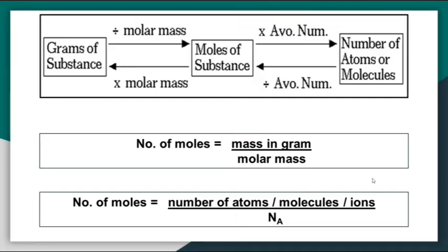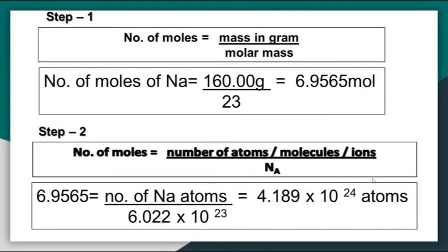We use the formula: Number of moles = mass in grams ÷ molar mass. Then, number of moles will be multiplied by Avogadro's constant. Step 1: Number of moles = 160 g (mass of sodium) ÷ 23 (molar mass of sodium). We obtain 6.9565 moles of sodium.